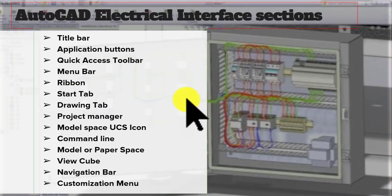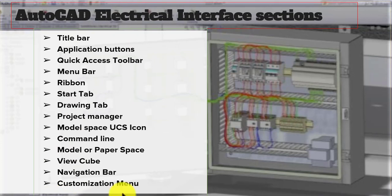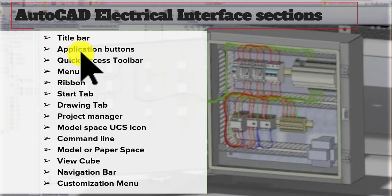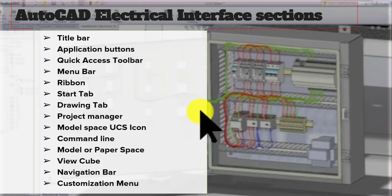While starting to work on AutoCAD Electrical software, or any other software, the first thing you have to know is to remember the names of the different sections of that software. These are the different names of the interface sections of AutoCAD Electrical software. We will go in detail in the next lecture about what these sections are and how we can divide the whole software workspace into these different tabs. These are very important and we will go through each and every tab in the next lectures.